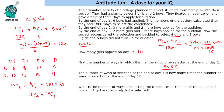After simplification — 15 cancels, 14 becomes 7, leaving 7 × 13, which is 91. So the answer to this question is 91.